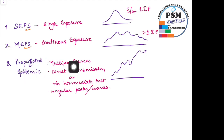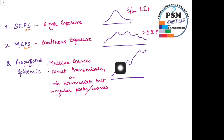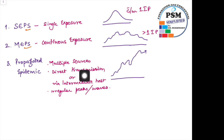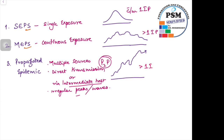In the propagated epidemic, there could be multiple sources. There is no single wave — multiple irregular waves can occur. There is person-to-person transmission, or there could be an intermediate host involved. This is also more than one incubation period.